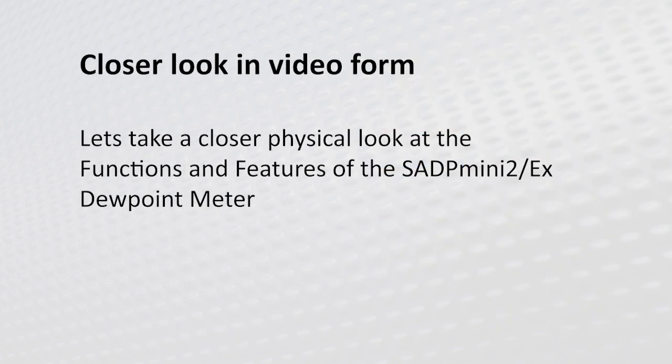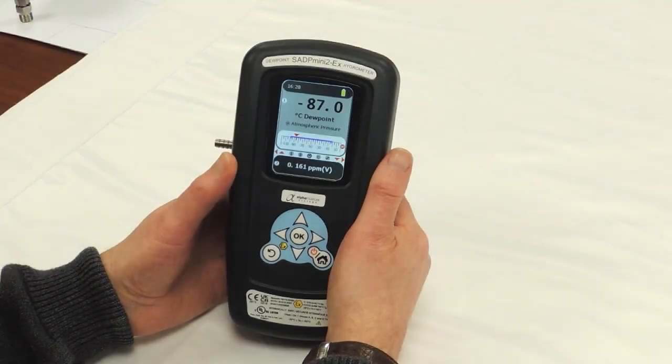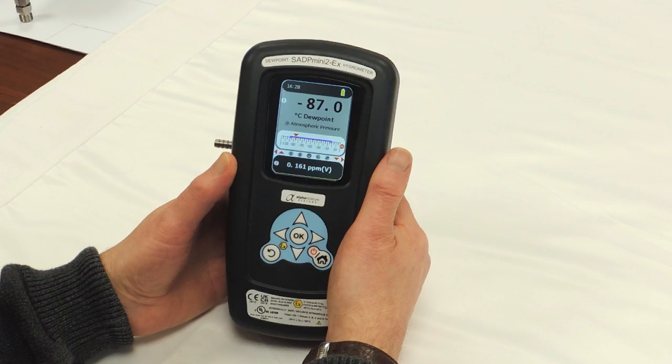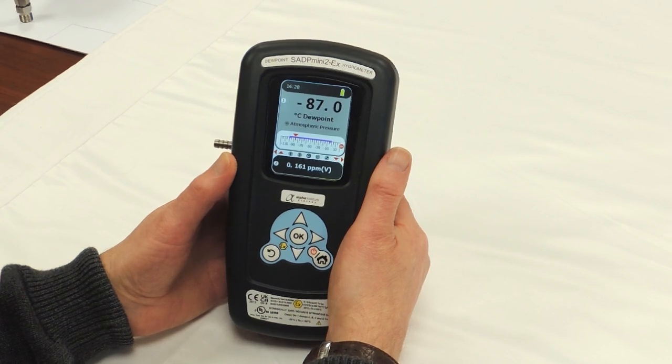Let's take a closer look at the functions and features of the SADP Mini 2 dew point meter. For this demonstration we're going to show you the details of the SADP Mini 2 EX. This is similar to the Mini 2 but in this case we're showing you the EX version.